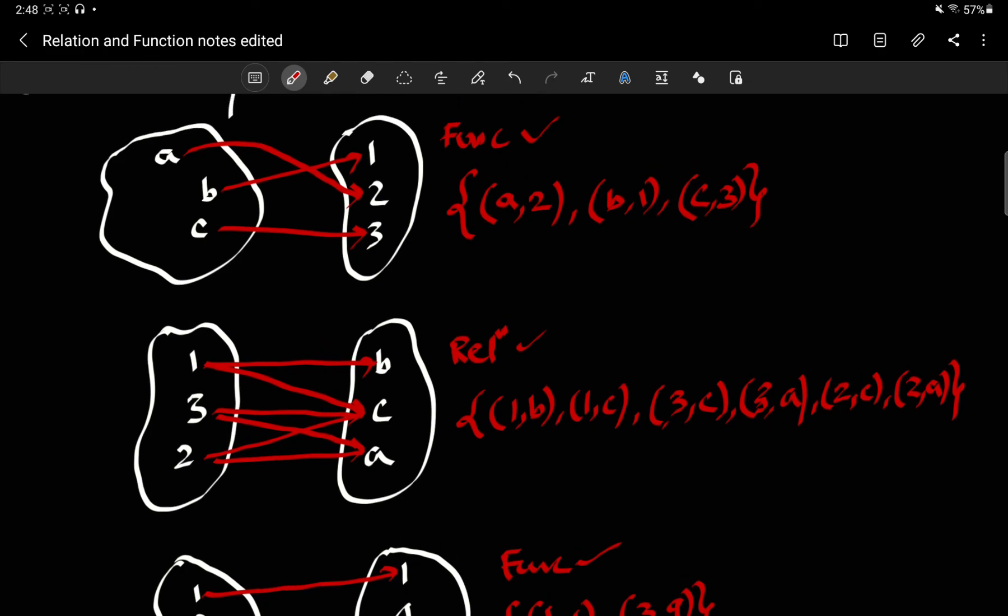Now before I end this video, I just want you to sort of observe and see how you would frame the condition of something to be a function when you're given in terms of ordered pairs. For example, what is different about example one and three and example two that makes one of them a relation and not a function and the other two functions?